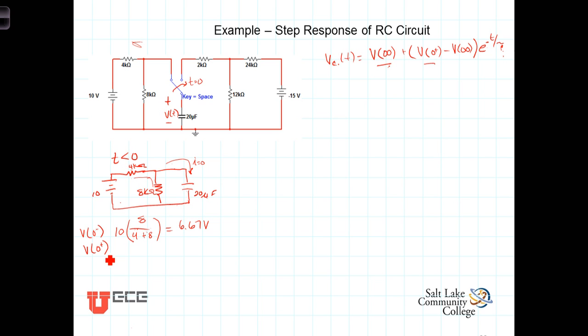We now switch the, or flip the switch to this position. And once again, let's redraw the circuit. This time, we have our capacitor. This is for T greater than zero. We have a capacitor.